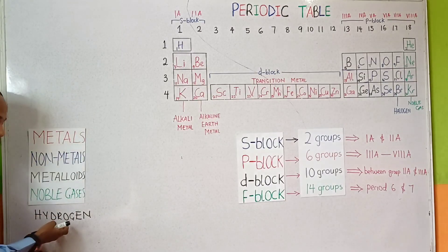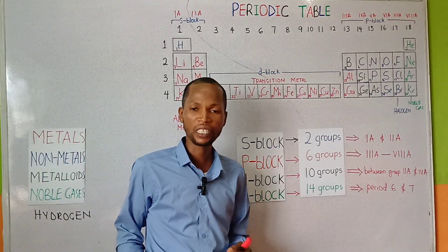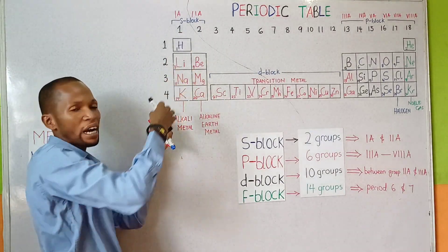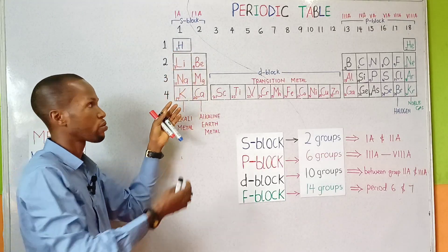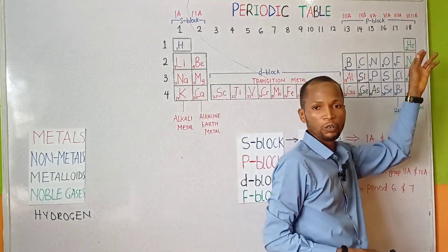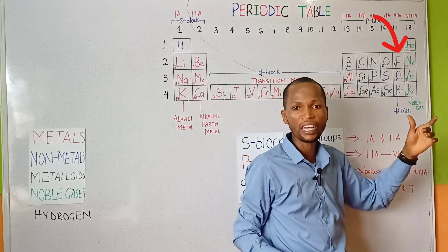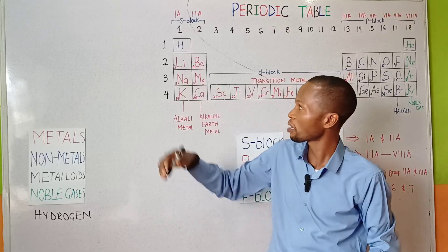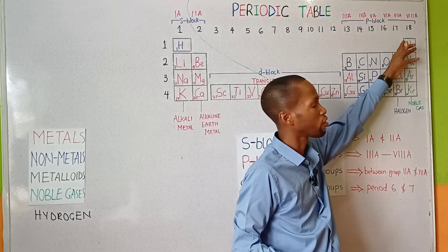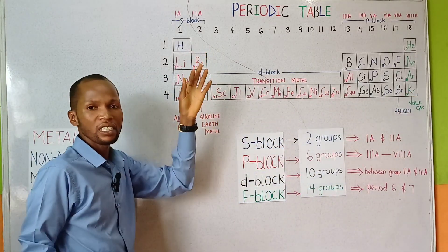Hydrogen is the lightest and the most abundant element in the universe. Its chemistry resembles that of group 1A elements found in the S block. But hydrogen is separated from the main elements in this group because hydrogen can also be found in group 7A or group 17. Elements in group 17 have one electron to complete the outermost shell — the same thing with hydrogen. It needs one electron to complete its duplet structure. Therefore it can be placed in group 17, also known as group 7A of the main group. Therefore, hydrogen is a non-metal.